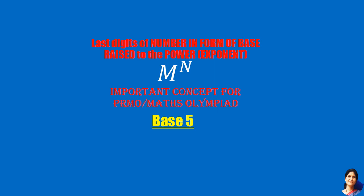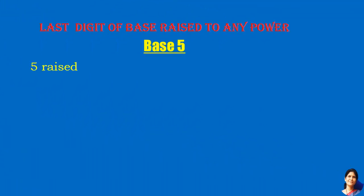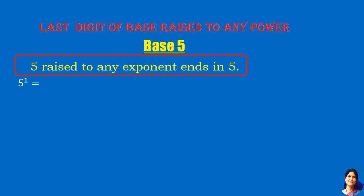We will learn about base 5, or base is a number ending in 5. 5 raised to any exponent ends in 5. 5 times 1 is 5; 5 squared is 25; 5 cubed is 125; 5 to the 4th is 625. So, we observe that it always ends in 5.